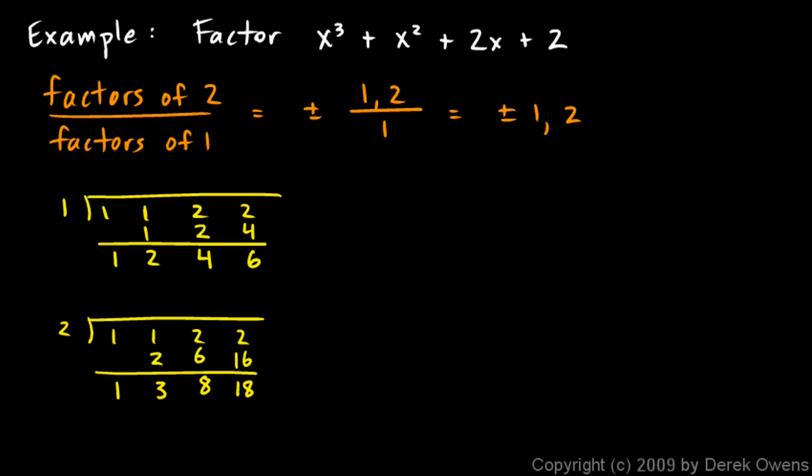So let's come back and try negative 1 and negative 2. We'll do negative 1 first. 1, 1, 2, 2. And here we go. 1 times negative 1 is negative 1, we add and we get 0. 0 times negative 1 is 0. We add, we get 2. 2 times negative 1 is negative 2. And we add and we get 0, and there we have it.